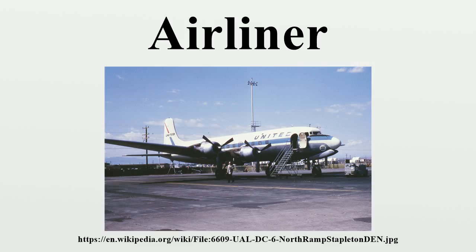The lightest short-haul regional feeder airliner type aircraft that carry 19 or fewer passenger seats are called commuter aircraft. The Beechcraft 1900, for example, has only 19 seats.